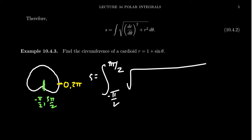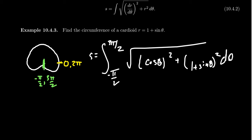By the formula, we take the square root of r prime squared — the derivative of 1 plus sine theta is cosine theta, squaring that — plus r squared, which is 1 plus sine theta squared, d theta. The reason we go from negative pi halves to 3 pi halves is symmetry: if you cut along the y-axis, the cardioid is symmetric, so we use s equals 2 times the integral from negative pi halves to pi halves.